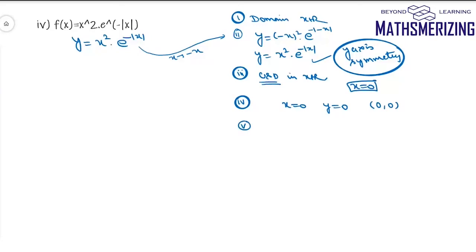Now because this graph has a y-axis symmetry, so what I'll do is, I'll draw the graph when x is greater than or equal to 0 and then I'll replicate the same graph on the left-hand side. So I'll write this function as y equals x square, e to the power minus x, when x is greater than or equal to 0.